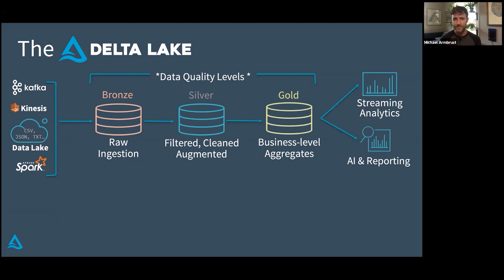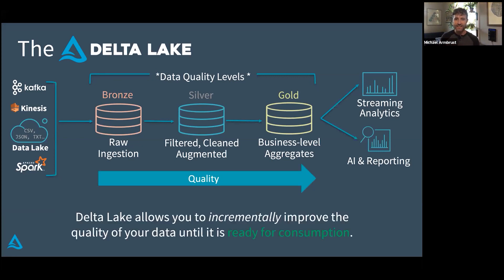Now I want to talk about some patterns that start to emerge once you stop being distracted by distributed systems problems and start focusing on data quality. One of the things I've seen a lot — and these are generalities, not specific features of Delta — is what happens when you start thinking about quality rather than systems problems. You start realizing that what you really want to do is incrementally improve the quality of your data until it's ready for consumption. It's not a one-stop process, and I think that's actually a good thing.